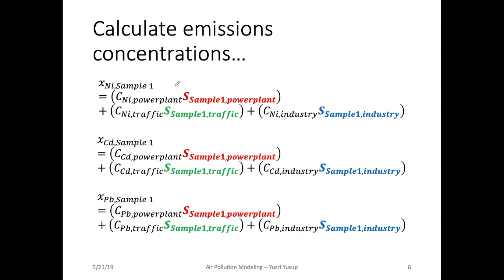The nickel concentration is 10 micrograms per meter cube, and that is the X variable. So, 10 equals the fraction of nickel from the power plant — which is 10% — multiplied by the emission concentration of the power plant.